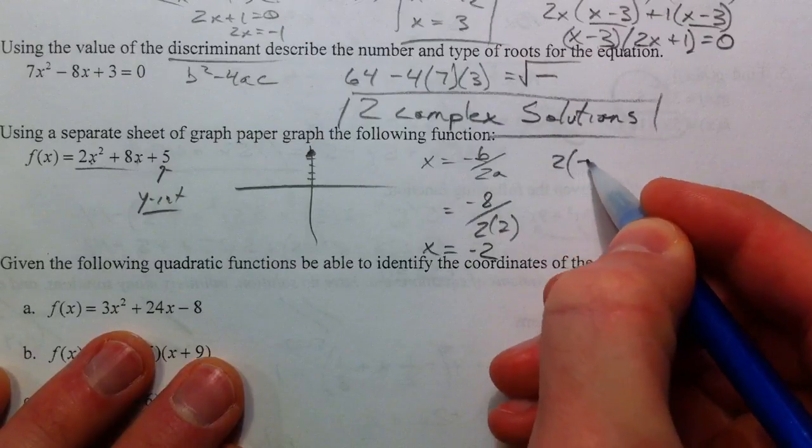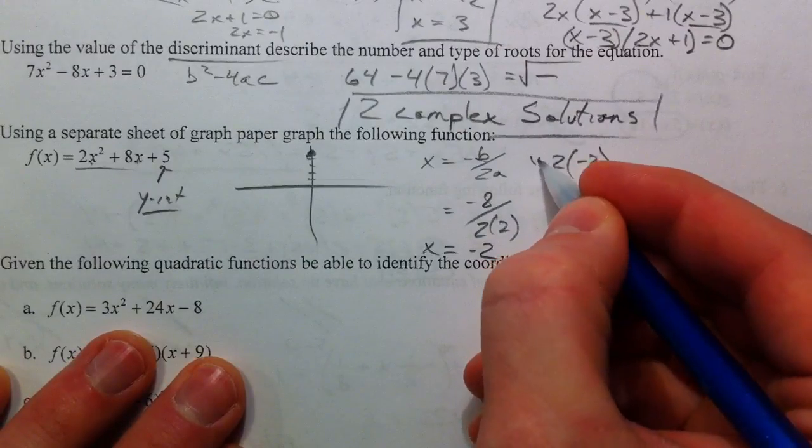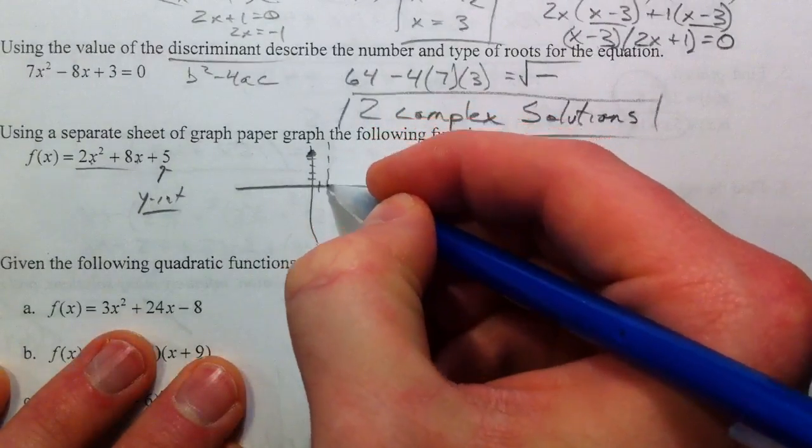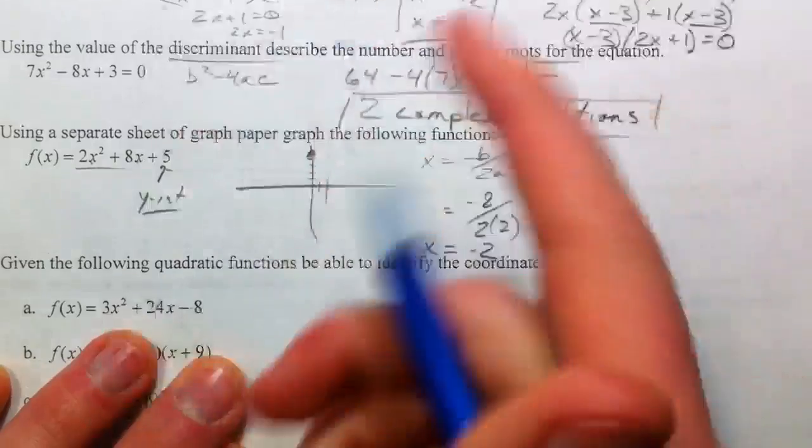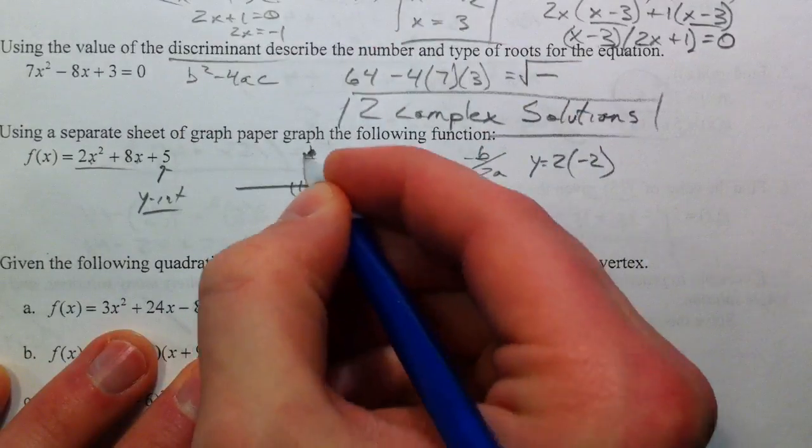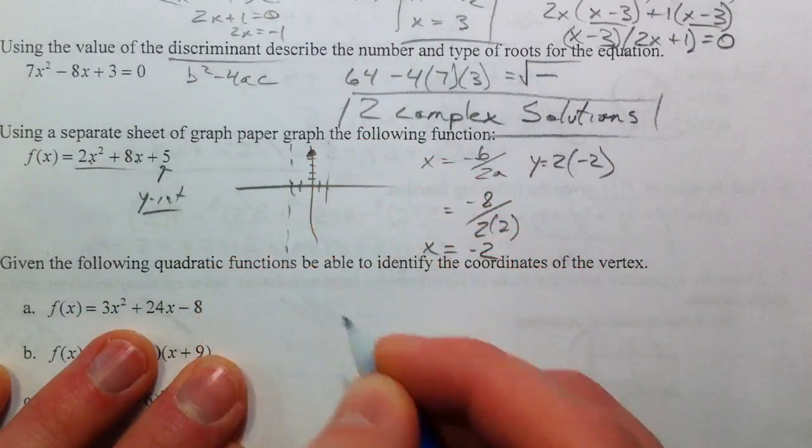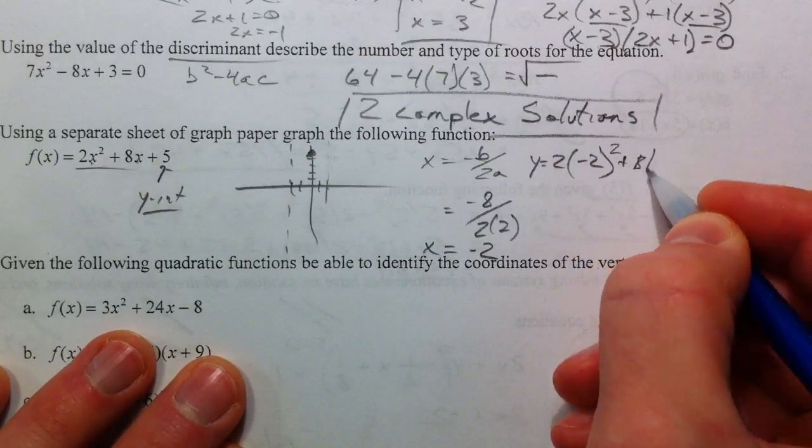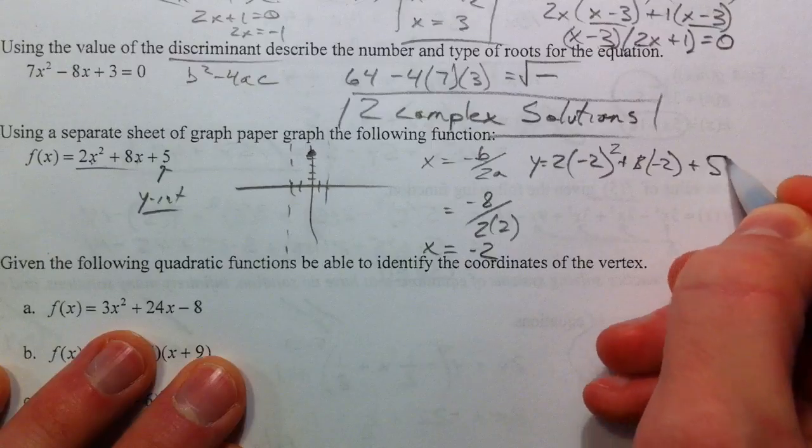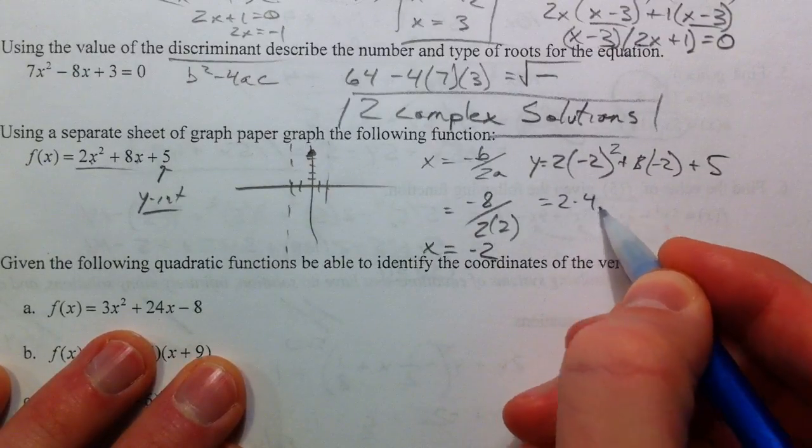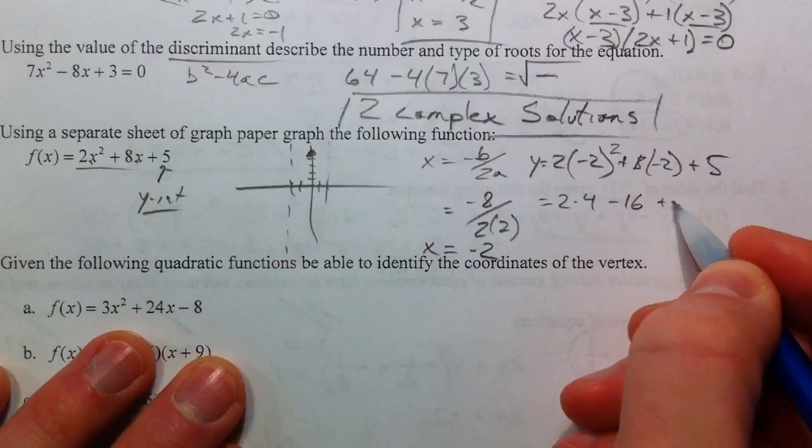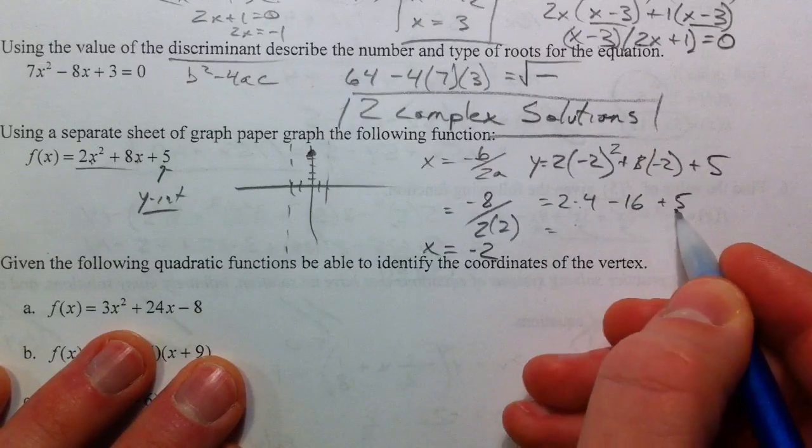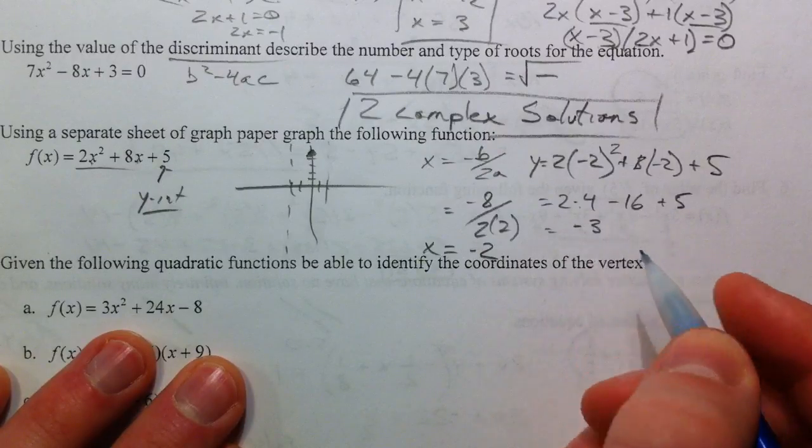If you plug that back in to find y, you can find the y-coordinate of your vertex. You know that it's going to be centered around negative 2 is what I meant to do. Square it, plus 8 times negative 2, plus a 5. So you have 2 times 4, minus 16, plus 5. 8 minus 16 is a negative 8, plus 5 is a negative 3.